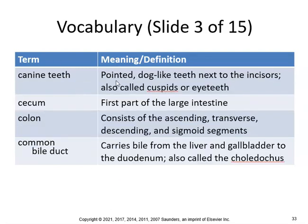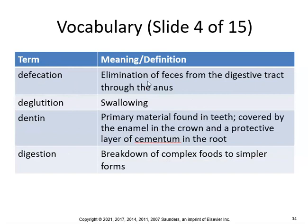Canine teeth are pointed, dog-like teeth next to the incisors, also called cuspids or eye teeth. The cecum is the first part of the large intestine. The colon consists of ascending, transverse, descending, and sigmoid segments. The common bile duct carries bile from the liver and gallbladder to the duodenum, also called the choledocus. Defecation is the elimination of feces from the digestive tract through the anus. Deglutition is swallowing. Dentin is the primary material found in teeth, covered by enamel and a protective layer of cementum. Digestion is the breakdown of complex foods to simpler forms.